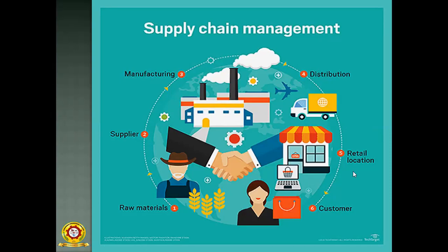After manufacturing, the product is delivered to the retail location — the retailer store — and from there it leads to the customer. The customer places orders online, indicated with the laptop symbol in the diagram. For international export you use airlines. The total process from raw material collection up to the customer is called supply chain management.